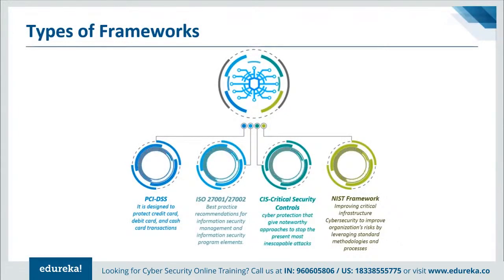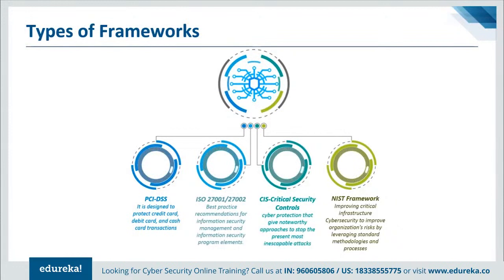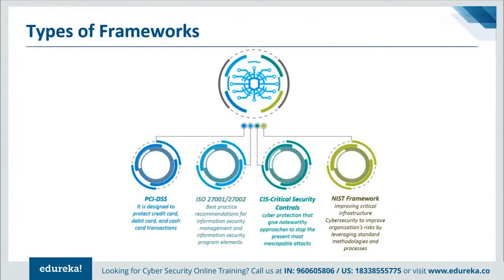The first type of framework is PCI DSS — Payment Card Industry and Data Security Standards — a set of security controls required to protect payment account security, designed to protect credit, debit, and cash card transactions. The second type is ISO 27001 and 27002, from the International Organization for Standardization, providing best practices recommendations for information security management and information security program elements. The third type is CIS — Critical Security Controls — a prescribed arrangement of activities for cyber protection that provides actionable approaches to stop the most prevalent and dangerous attacks, prioritizing fewer activities with high-impact outcomes.